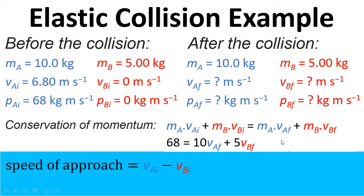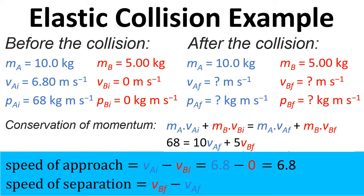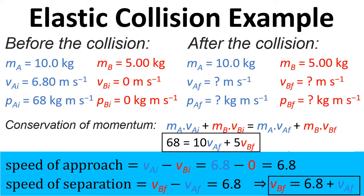We also know that the speed of approach, V_AI minus V_BI, equals 6.8 minus 0, which equals 6.8. We know that the speed of separation will equal that, so V_BF minus V_AF will also equal 6.8, because speed of approach equals speed of separation for an elastic collision. We can rearrange that — it's more useful to have it as V_BF equals 6.8 plus V_AF. So we've now got two equations with two unknowns.